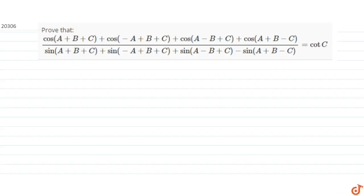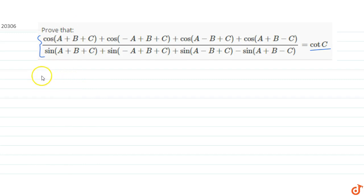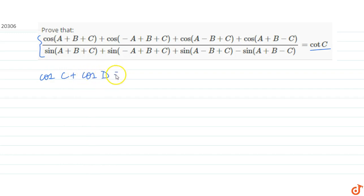In this question we have to prove that the whole expression equals cot(C). To prove that, we will use the identity that cos(C) + cos(D) equals 2 cos((C+D)/2) into cos((C-D)/2).